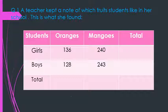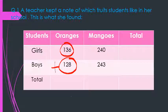Suppose the question is given: how many students in the school like oranges? So to find out this, you need to see the girls like oranges, that is 136. The boys like oranges, that is 128. Now when you add both, you get the number of students who like oranges.